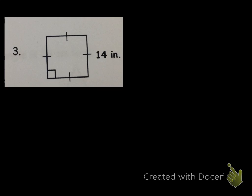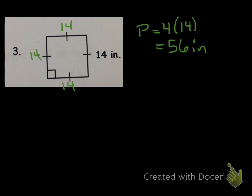Now the square. We know it's a square, so all four sides are 14. The perimeter is equal to 4 times the side length — so 4 times 14 — which is equal to 56 inches. And our area is equal to the side squared, because it's the base times the height. So 14 squared equals 196 inches squared.